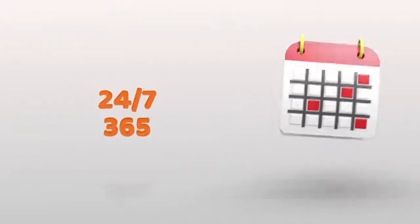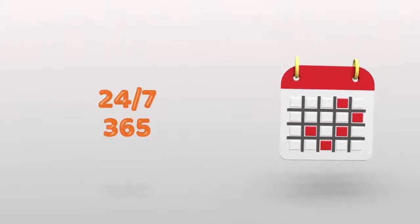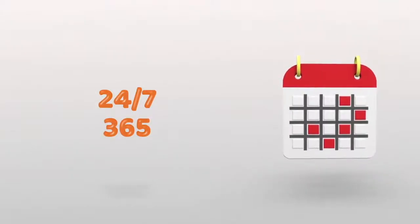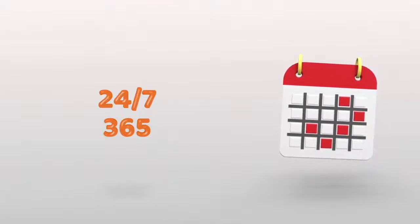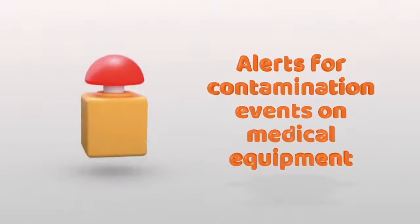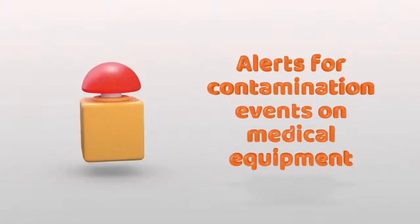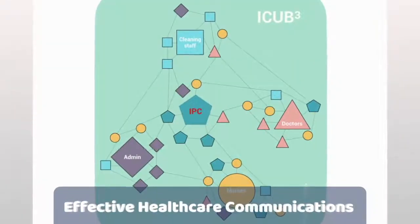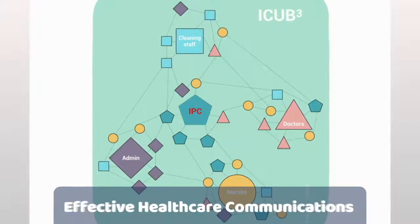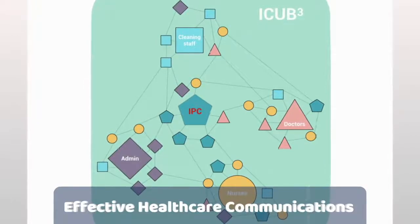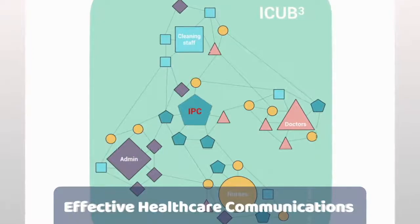Let me summarize the simple working principle of ICU B3. Everything starts at the edge with a systematic data collection by ICU B3 devices. When ICU B3 spots mistakes and omissions in regular tasks, it shares the data in real-time among various hospital teams. Our unique mechanism allows customizing coordination rules between diverse teams, which is critical for a cost-effective infection prevention and control program.